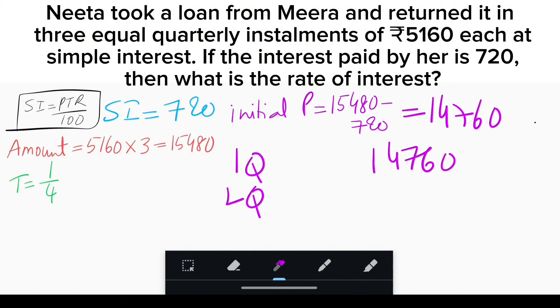For the third quarter, another installment is paid, so the principal amount is ₹9,600 - ₹5,160 = ₹4,440.